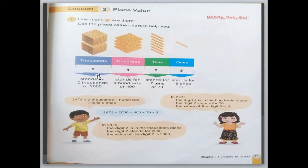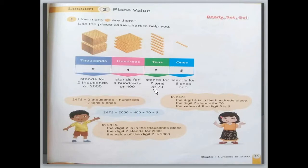The digit is the number in the place value — thousands, hundreds, tens, and ones is the place. But 2000 is the value of 2 in the thousands, 400 is the value of 4 in the hundreds, 70 is the value of 7 in the tens, and 5 is the value of 5 in the ones.